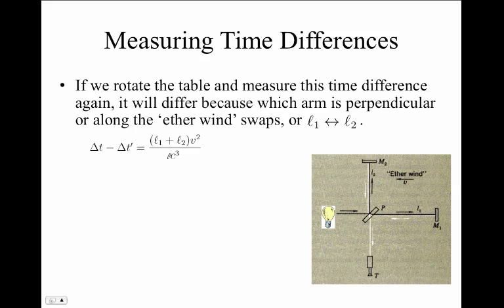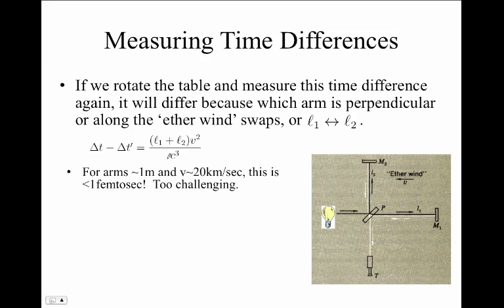The rotation of the table effectively swaps the two lengths L1 and L2. In this case, then the difference between delta t and delta t prime is the sum of those two lengths times v squared over c cubed. In other words, that's a difference that's proportional to the speed through the ether wind. If we assume that the arms of the spectrometer are approximately a meter in length and the velocity is about 20 kilometers per second, this time difference is approximately 1 femtosecond. That's too challenging for most instrumentation, even today.